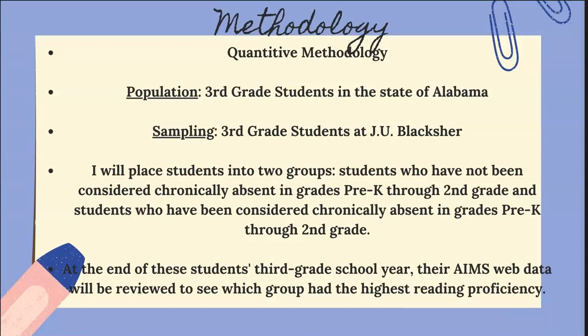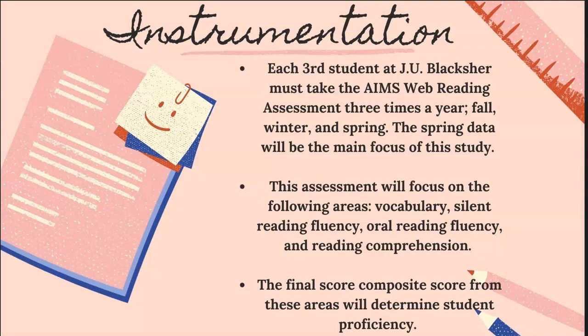During the study, students will be placed into two groups: students who have not been considered chronically absent in grades Pre-K through second grade, and students who have been considered chronically absent in grades Pre-K through second grade. At the end of these students' third grade school year, their AIMSweb data will be reviewed to see which group has the highest reading proficiency. Each third grade student at J.U. Blackshear must take the AIMSweb reading assessment three times a year — during the fall, winter, and spring.